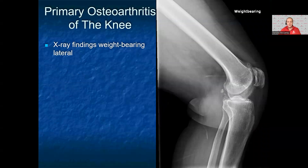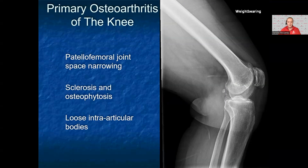Here is a lateral x-ray in a patient with the same history — note this is not the same patient as the last x-ray. This lateral weight-bearing x-ray shows degenerative changes of the patellofemoral joint space, identified by patellofemoral joint space narrowing, sclerosis, cystic changes, and osteophytes. The patient also has sclerosis of the medial joint line. There are also loose bodies in the joint. This is consistent with knee osteoarthritis.